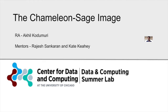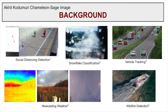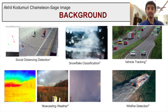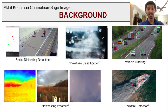The Chameleon Sage Image. This project focuses on a national-scale reusable cyber infrastructure to enable AI at the edge. Cool things like wildfire detection, vehicle tracking, snowflake classification, and social distancing detection will be made available at the edge thanks to members of the Sage team.